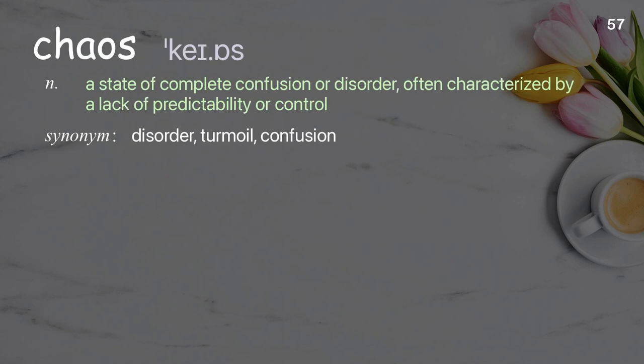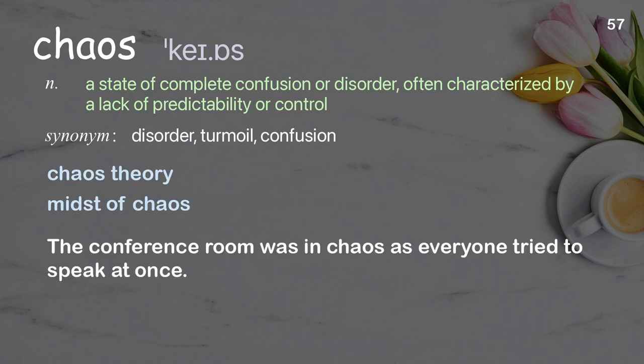Chaos: a state of complete confusion or disorder, often characterized by a lack of predictability or control. Examples: chaos theory, midst of chaos. The conference room was in chaos as everyone tried to speak at once.